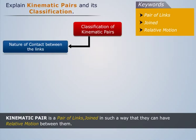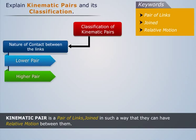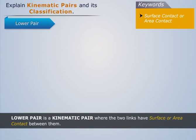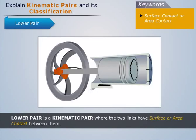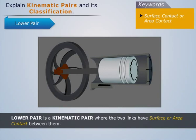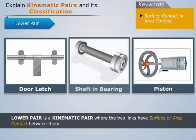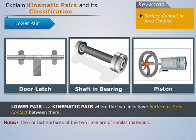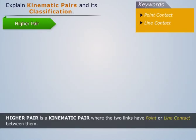First, let us classify kinematic pairs on the basis of nature of contact between the links. A lower pair is a kinematic pair where the two links have surface or area contact between them. For example, in a piston-cylinder arrangement, the piston is in surface contact with the inner wall of the cylinder. Door latches and a shaft rotating in a bearing are some other common examples of lower pairs.